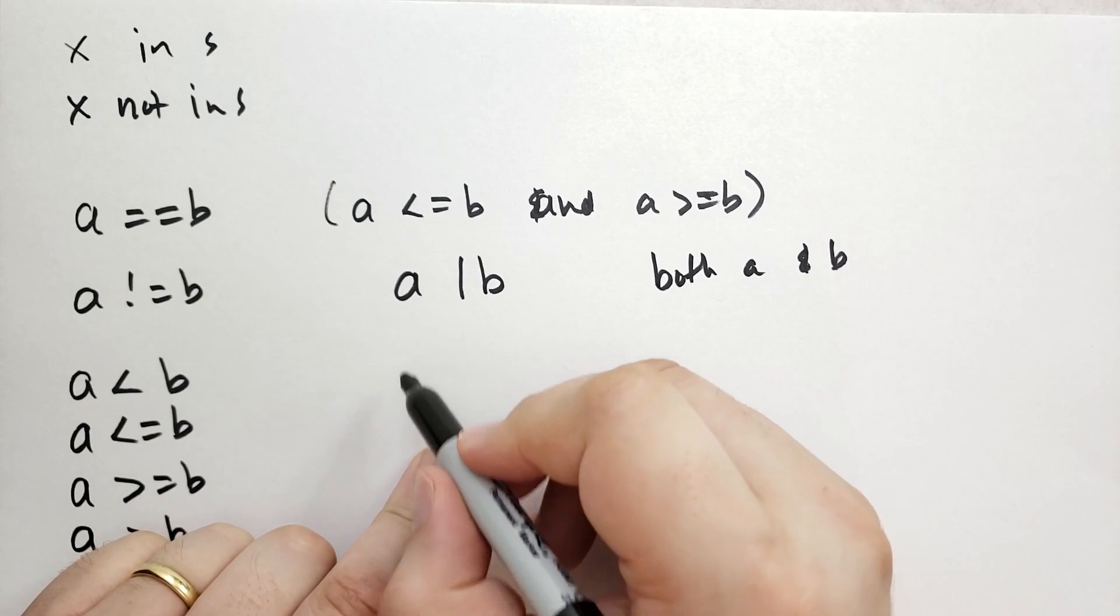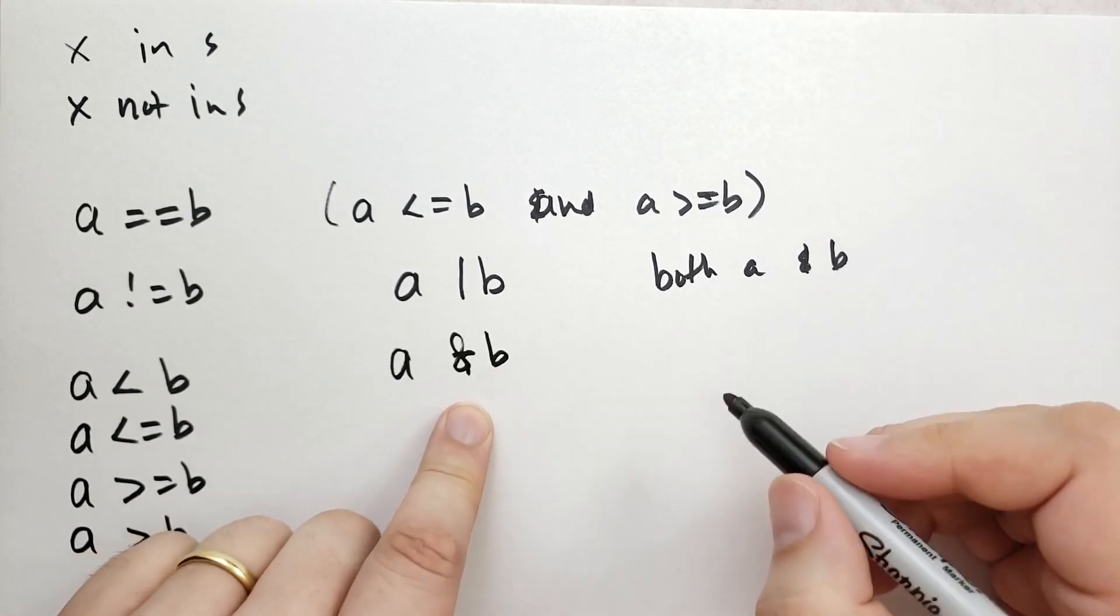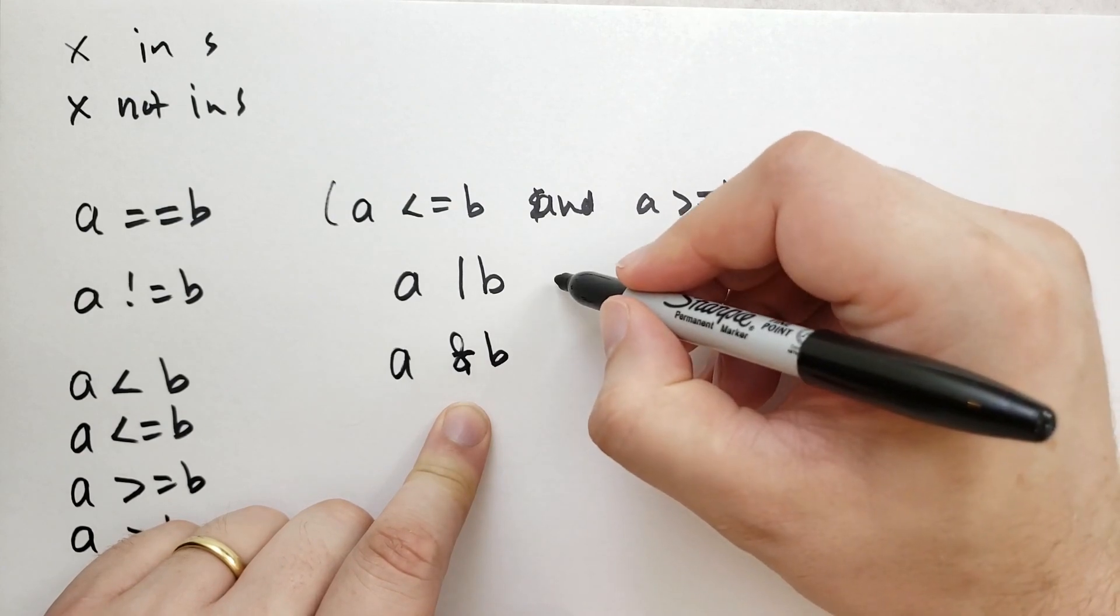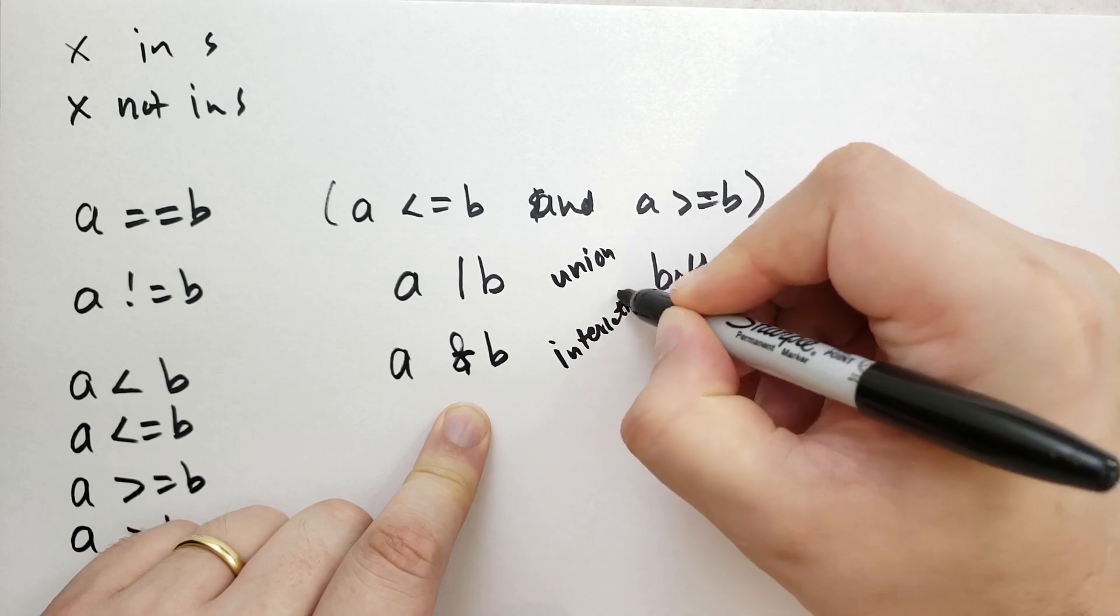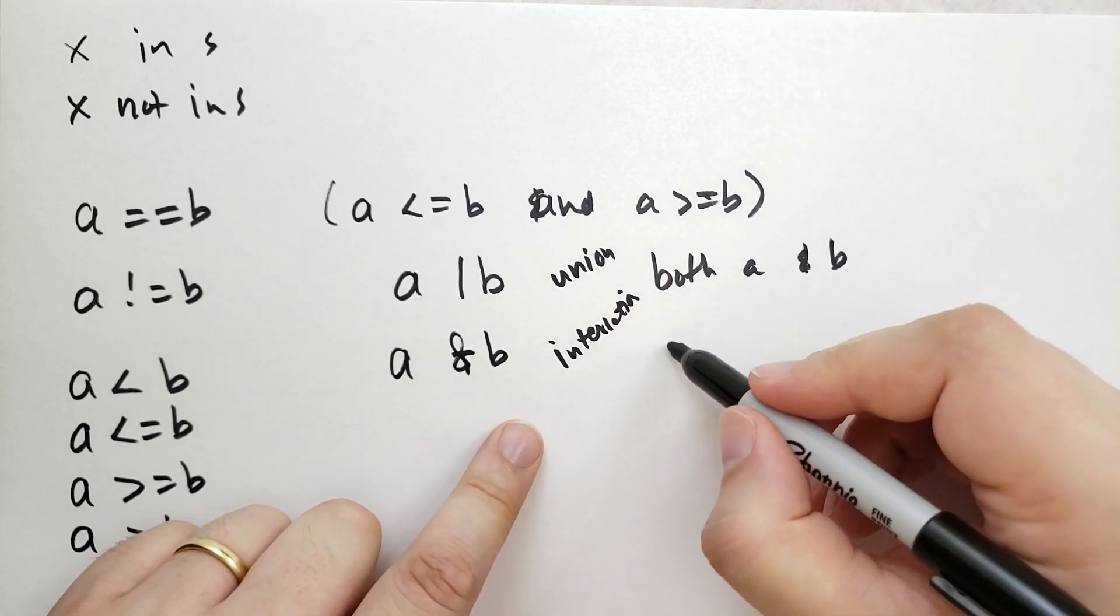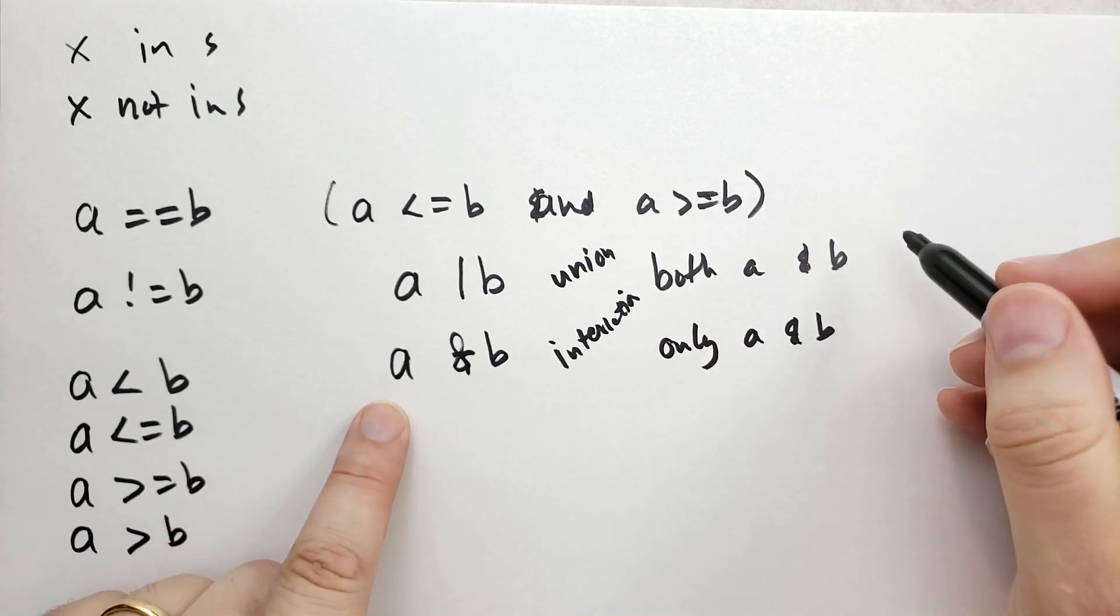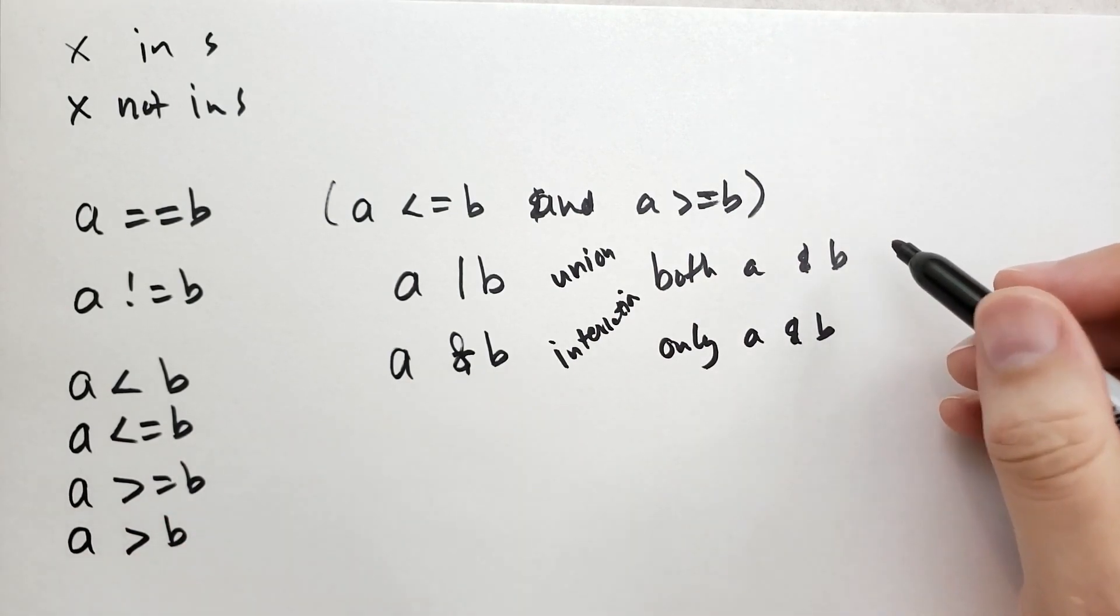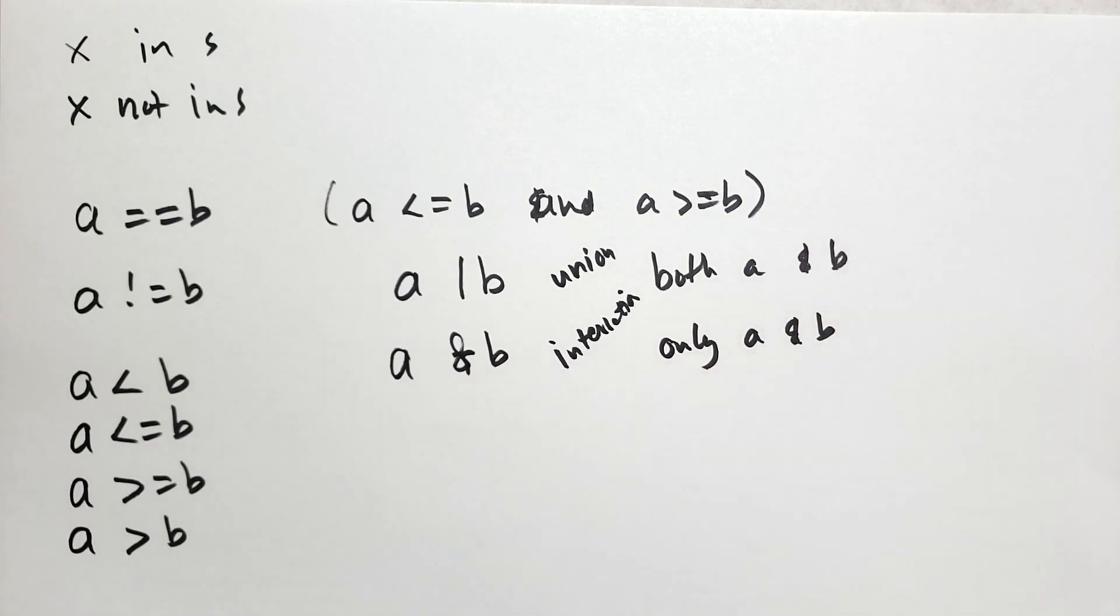Right, and b isn't a subset of a or whatnot, then we have the ampersand. So we're going to call this one union. This one is called intersection. So this one says only in a and b. So if an element is both in a and in b, then it's returned. This one returns an element that you'll find in a and all the elements you'll find in b.